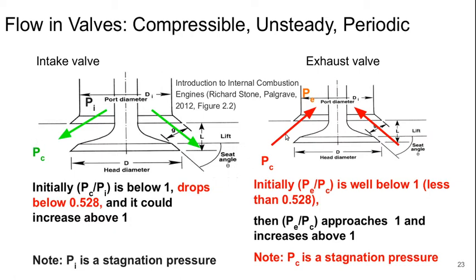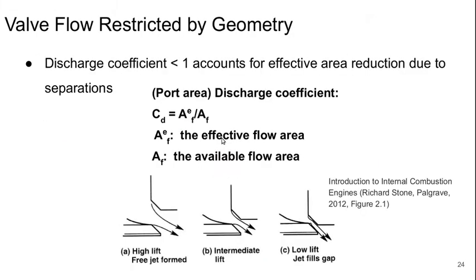In the exhaust valve it's a similar idea. Initially the stagnation pressure in the combustion chamber is high and the static pressure in the exhaust port is low, and again that flow can choke as it comes out. Then that ratio gets closer to 1 so the Mach number decreases as more and more air leaves the cylinder. Eventually it would increase above 1 and potentially get backflow. Basically, how much flow we can get through the valve is restricted by the geometry since we're getting to the point that the flow is choking.